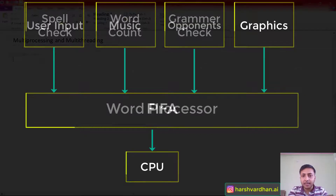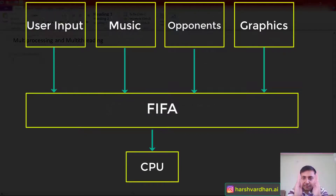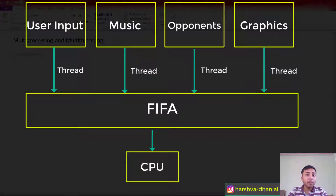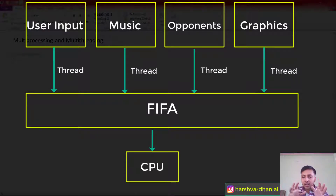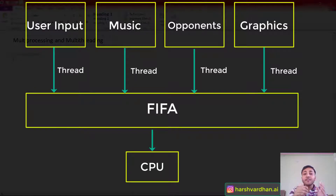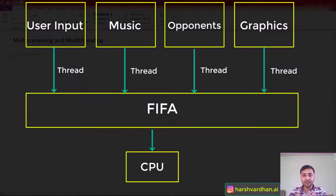Take another example of the FIFA game. The FIFA game software is a process, whereas user input, music, graphics, and the opponent AI are four different threads. Threads are the functionalities of a particular program, and the program as a whole is called a process.